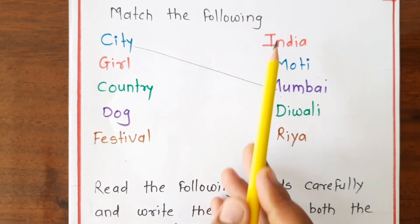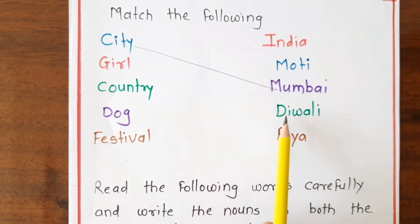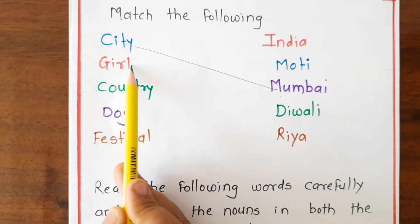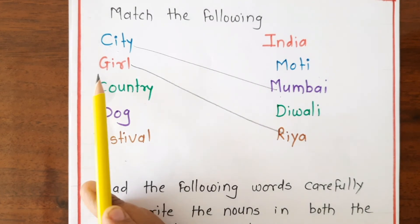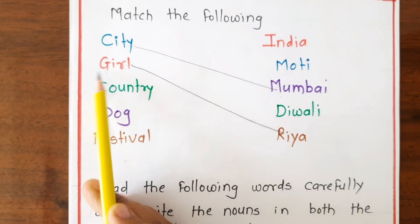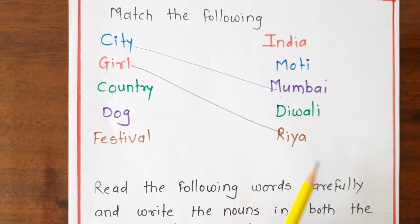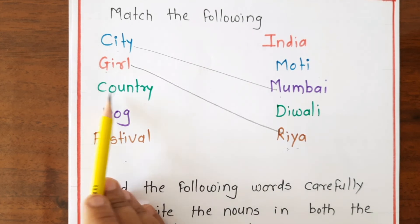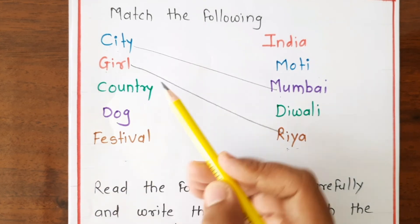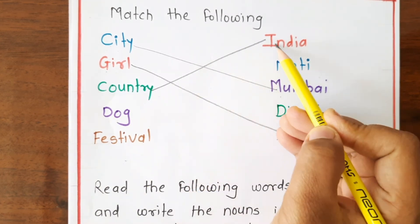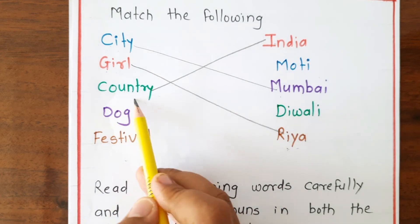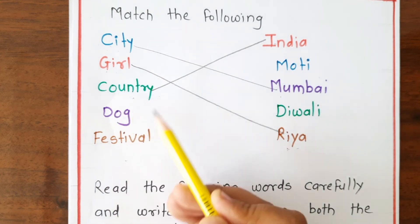Next, match: girl. The options are India, Moti, Diwali, Riya. Riya is a particular girl's name, so 'girl' is the common noun and 'Riya' is the proper noun. Next, country — 'India' is a proper noun and 'country' is the common noun.